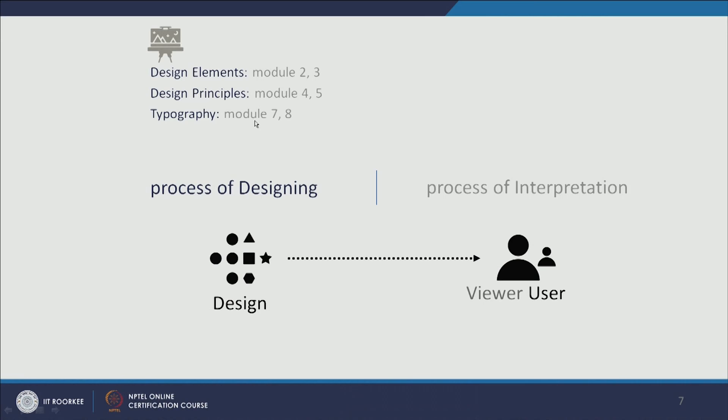Then the principles of design — how we arrange these elements, with what kind of theories. Principles of design are not just the process of design; they are also derived from the process of interpretation, how the user perceives it. Based on that we have to arrange all the elements of design into a composition. It can be a 2D composition, or it can have a time frame — so it becomes animation or game design — or the same process will follow even in websites. These principles will be learned in Module 4 and 5.